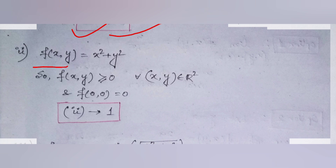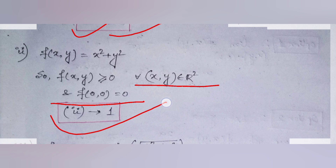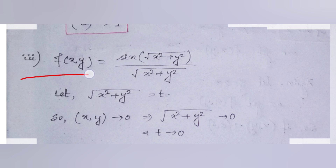For option number two, f(x,y) = x² + y², where f(x,y) ≥ 0 for all (x,y) ∈ ℝ², and f(0,0) = 0. So option number two belongs to graph number one.